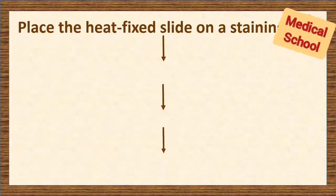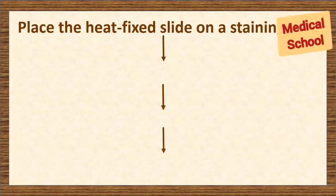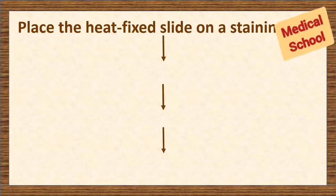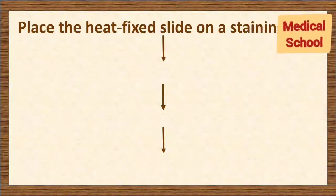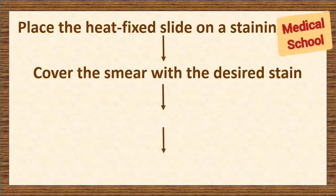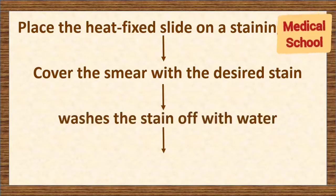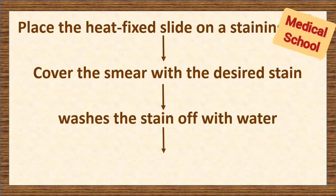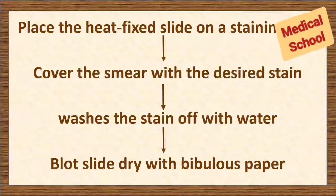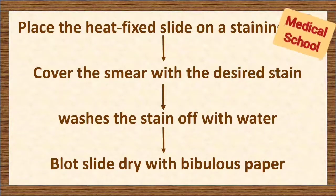Let's take a look at the procedure step by step. Place the heat fixed slide on a staining rack. Cover the smear with a small amount of the desired stain for the proper amount of time. Wash the stain off with water for a few seconds and, finally, blot the slide dry with bibulous paper.